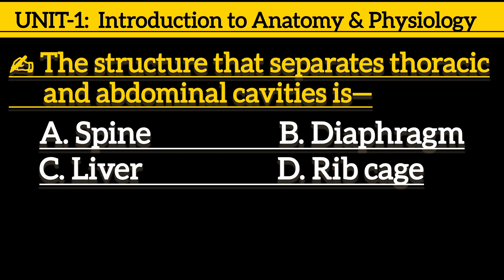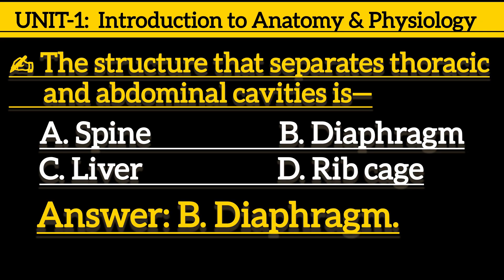Next one is, the structure that separates thoracic and abdominal cavities is: option A, supine; option B, diaphragm; option C, liver; option D, ribcage. Correct answer is option B, diaphragm.